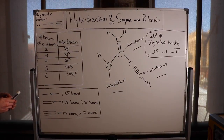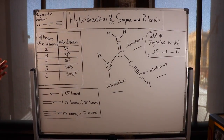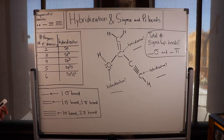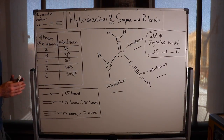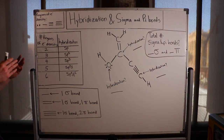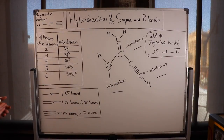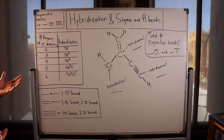So hybridization and sigma bonds. Hybridization is not an easy topic but we're going to make sense of it. The first thing I want to do is go through all the information about hybridization and sigma and pi bonds that I think you should have memorized. On the test, having this information memorized will not only save you time but it will help you understand things that are a little bit more theoretically difficult.